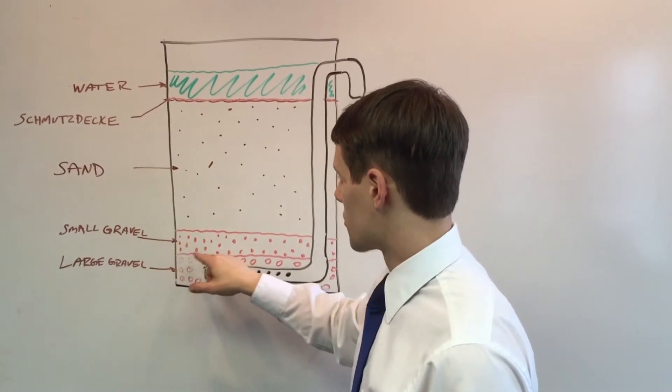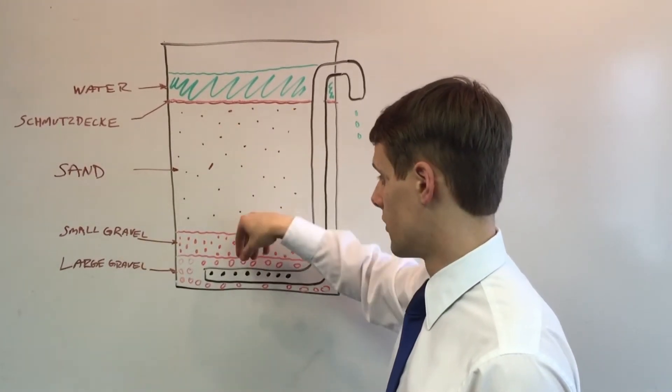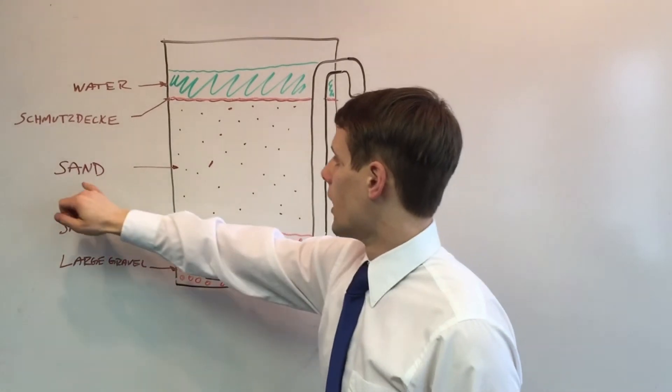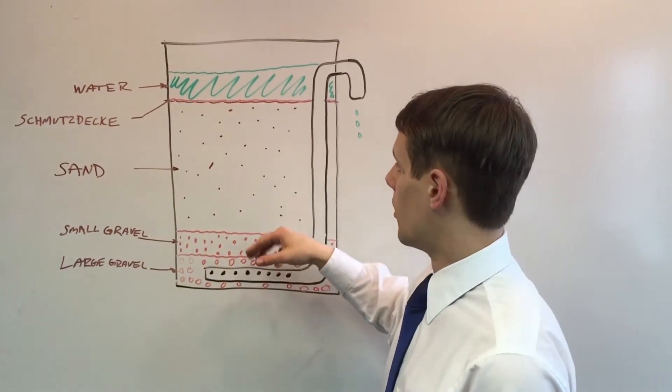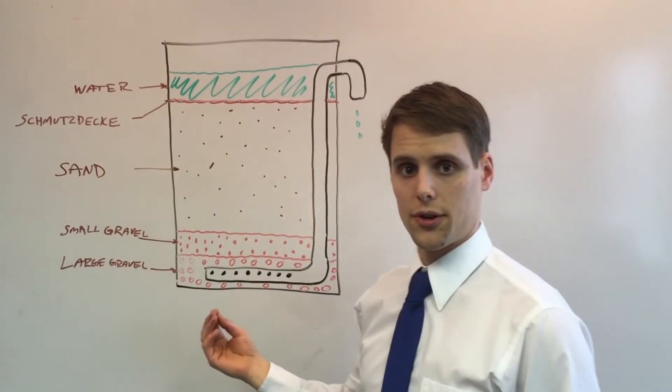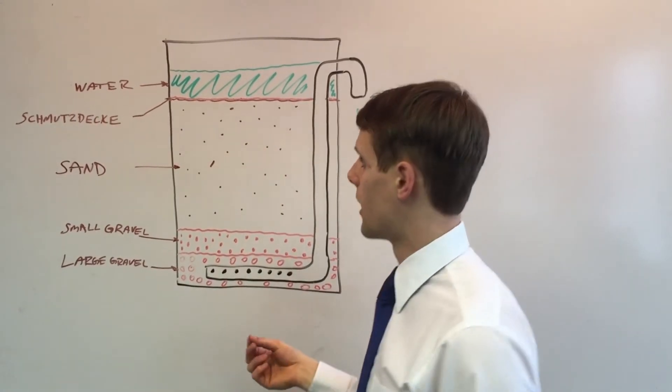On top of the large gravel you place small gravel so that your sand layer doesn't filter down and clog your pipe. And then you place sand on top of the small gravel, which is the layer that basically filters out the particulate matter from the water.